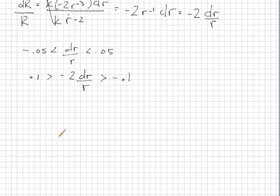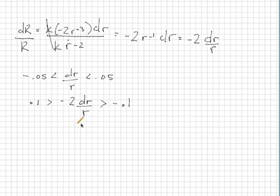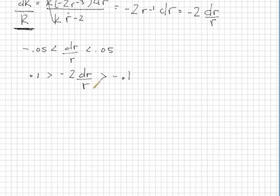Let's go ahead and flip these inequalities back the way we're used to seeing this. And now that we have negative 2 d little r over r in the middle here, we can rewrite it as d big R over R. What this means is that d big R over R is greater than negative 0.1 and less than 0.1.